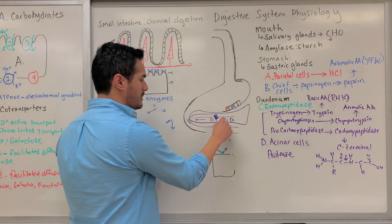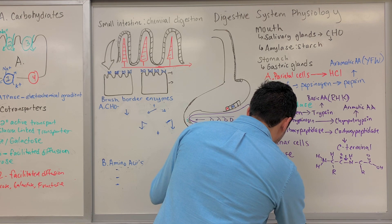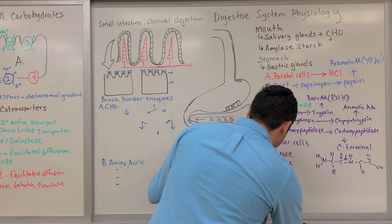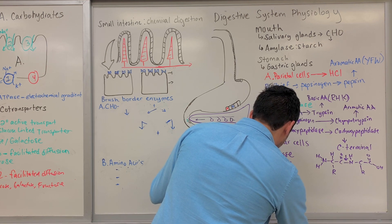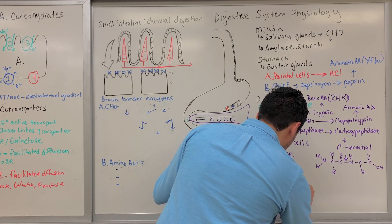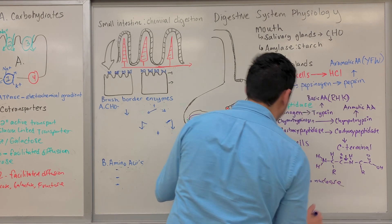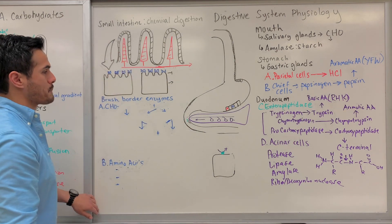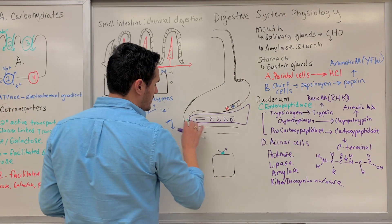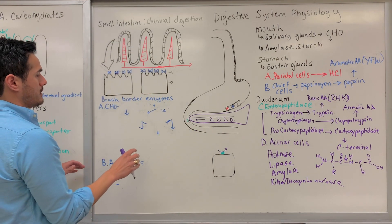These acinar cells within the pancreas also secrete other enzymes. Besides proteases, you have lipase. For carbohydrates, you have amylase, as well as ribonuclease and deoxyribonuclease, which work on RNA and DNA. Now that we've talked about all of this within the duodenum, the next thing is the brush border enzymes.